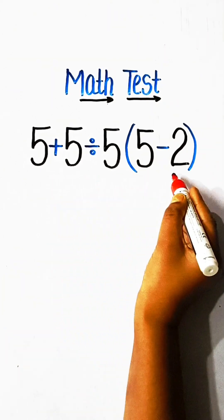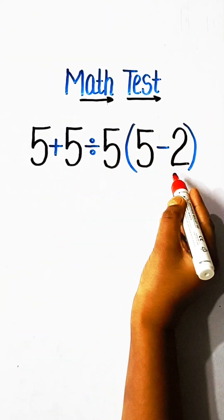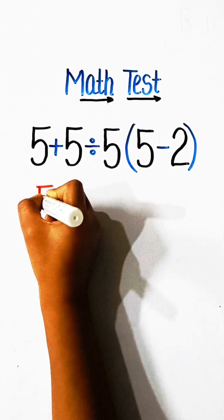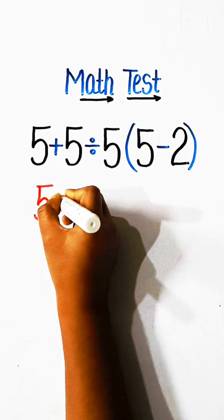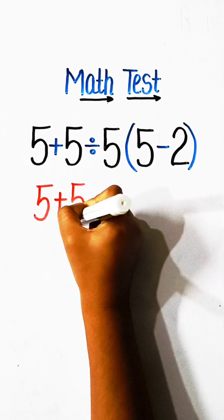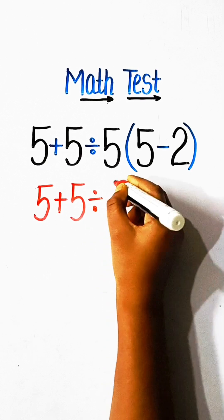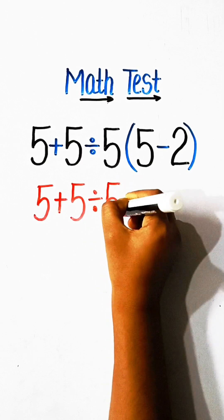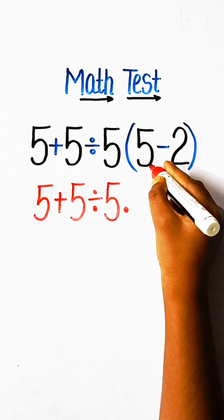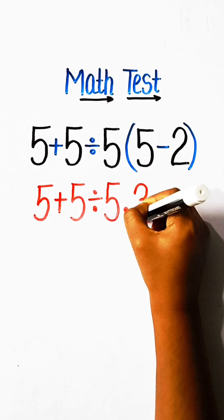Hello friends, in this video we will try to solve this math expression: 5 plus 5 divided by 5, multiply by 5, minus 2, equals 3.